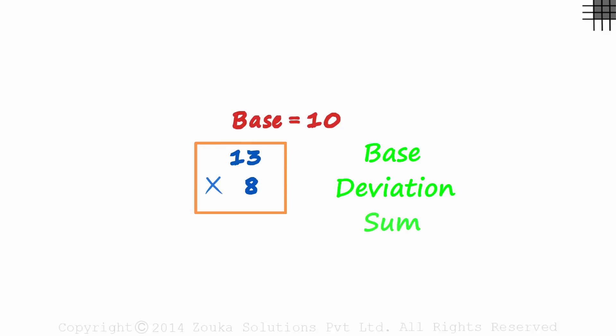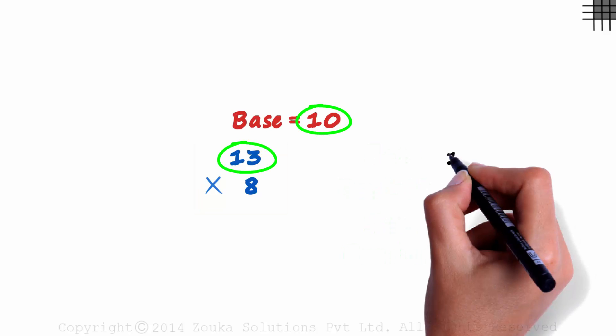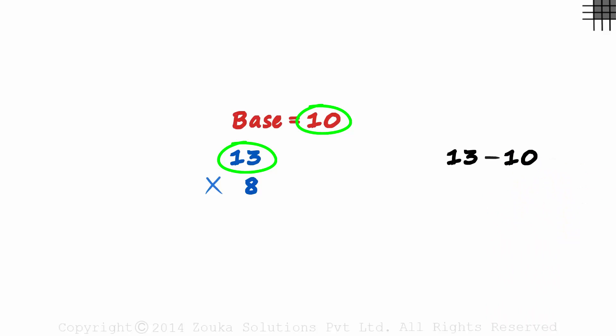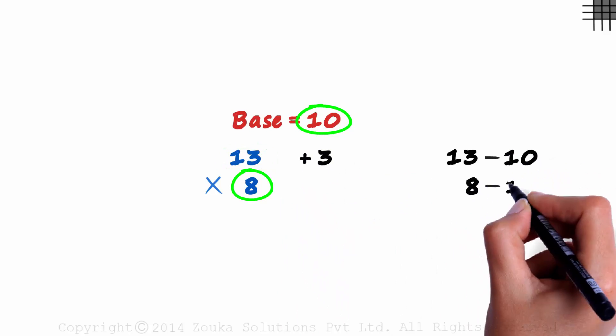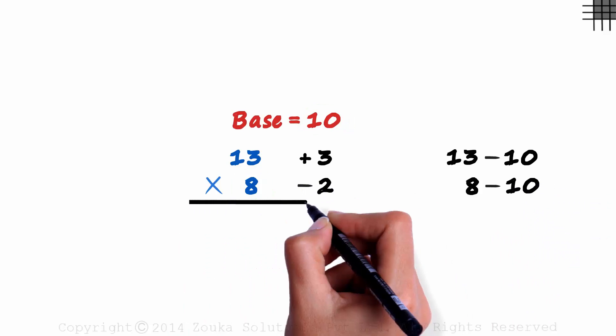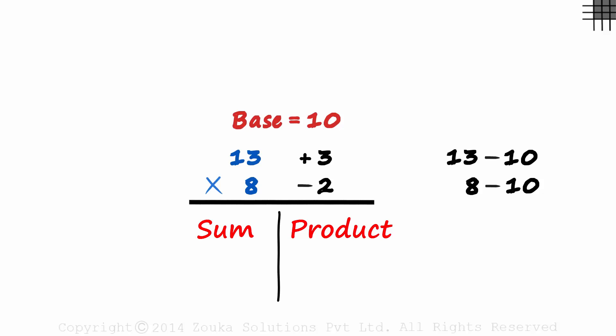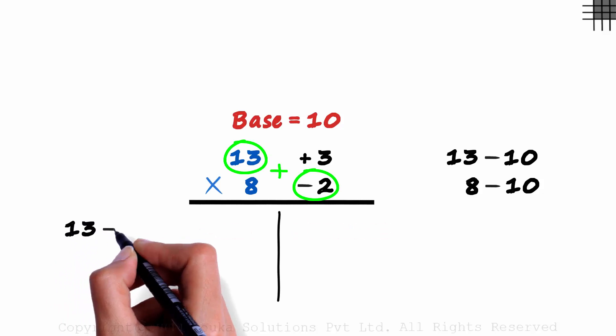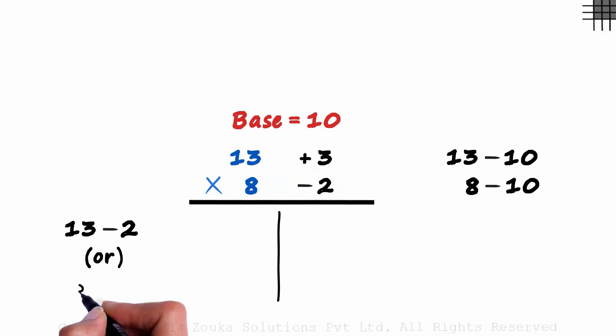Base, deviations, sum and product. The deviation of 13 from 10 will be 13 minus 10, 3, and the deviation of 8 from 10 will be 8 minus 10 and that is minus 2. Sum on the left and the product on the right. The sum can be 13 plus minus 2 which is 13 minus 2 or it can be 8 plus 3. Both give us 11.